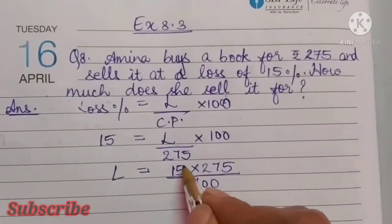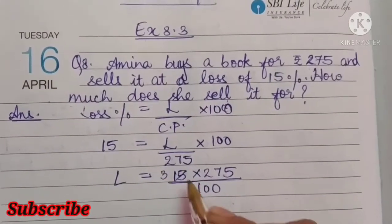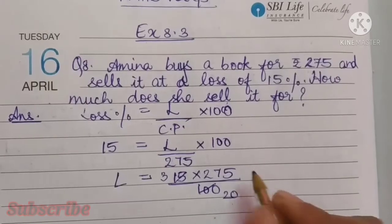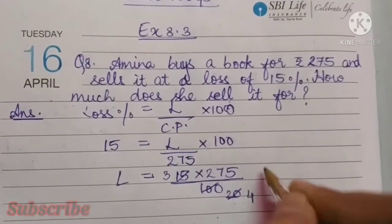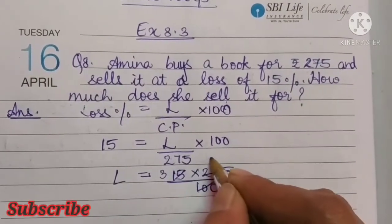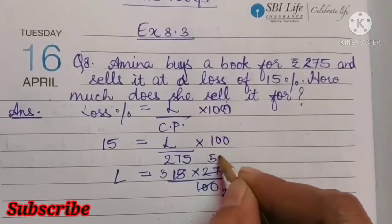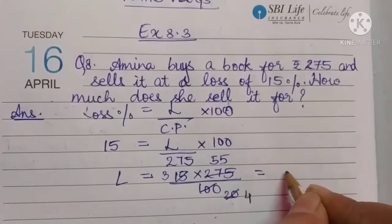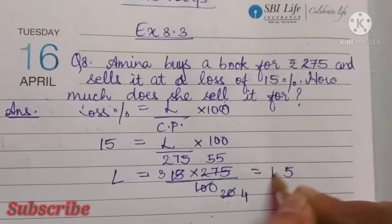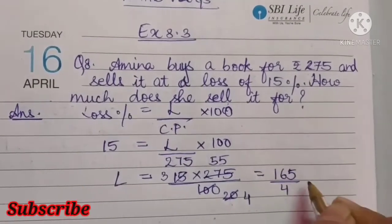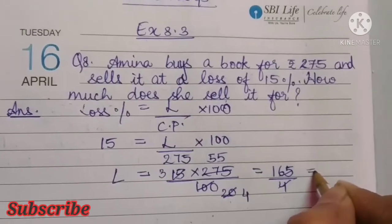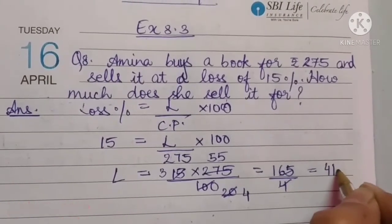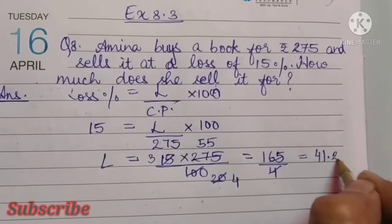Let us cancel it. Simplifying 15 and 275 by cancelling with 100: 5 threes are 15, 5 twos are 10, 5 fours are 20, 5 fives are 25. After cancellation we get 165 by 4. So loss is equal to 41.25.